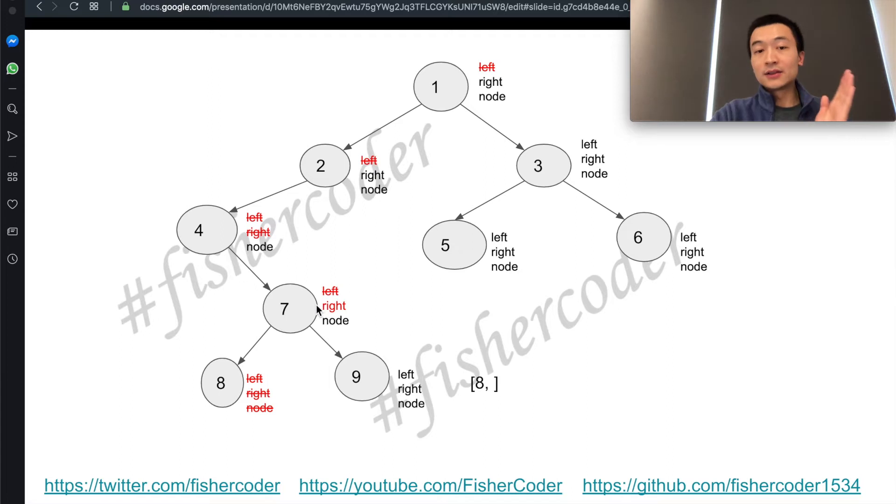Right, so now we'll try to access the right side of the right child of this node, which is 9. 9 attempts to go to its left, nothing. Right, nothing. Then it will try to add 9 itself, this node, into the list. Now we add 9.